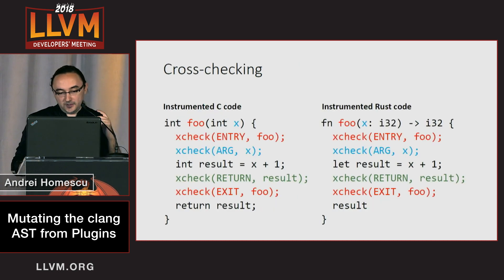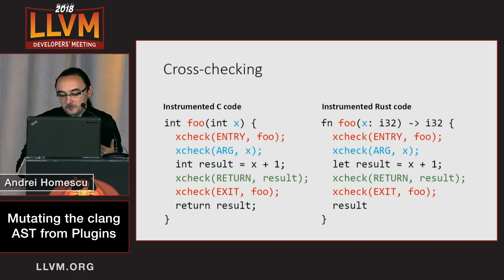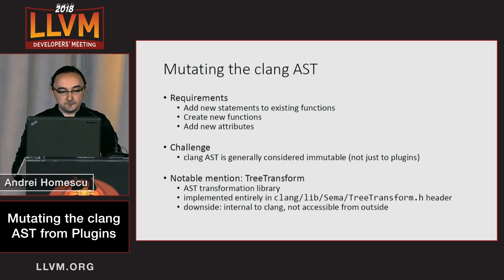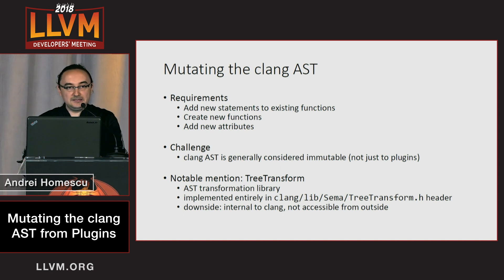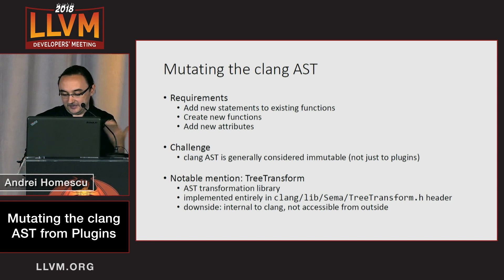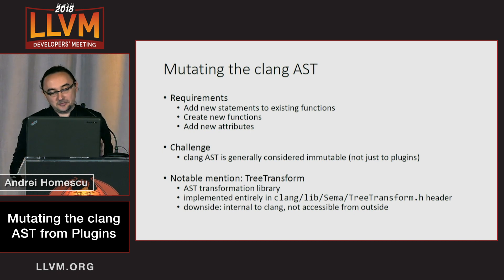We insert this instrumentation, and at first it seems like we could do this in the compiler — we could have Clang and Rust do this — but instead we opted to use compiler plugins. What we did is we wrote a Clang plugin that inserts statements, expressions, and new functions into the Clang AST, and then passes it back to Clang, which turned out to be a little bit of a challenge.